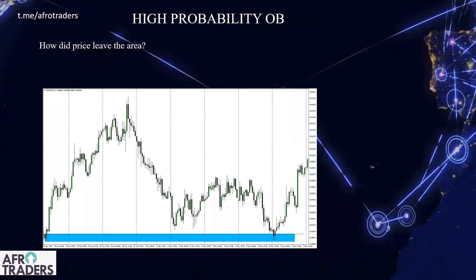Still looking at high probability — you want to know how price left the area. If there's an order block, how did price leave that area? Is there strength? We look at volume. Is volume increasing? If volume is increasing it shows strength. You'll see volume increasing at the point of departure, and when price is coming back to it, volume should be decreasing — very dry. The speed at which price left the area is a factor to consider when looking for a high-probability order block.